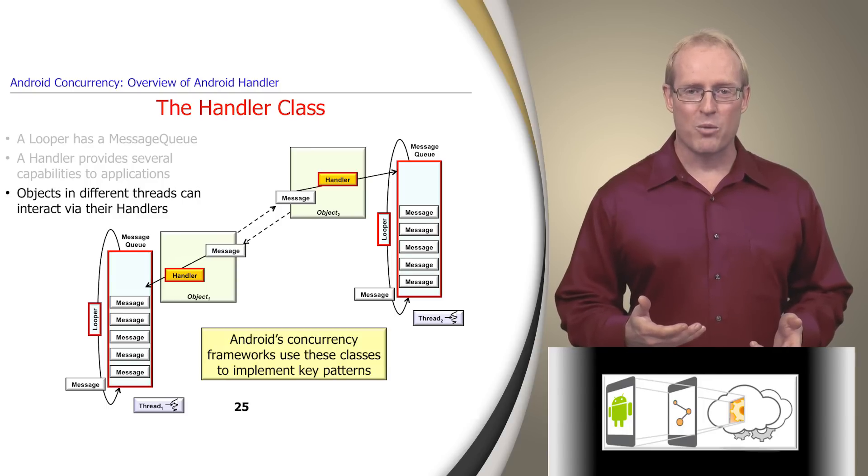Android concurrency frameworks use the handler, message queue, and looper classes to implement key concurrency patterns, such as active object, command processor, and the half-sync, half-async, as discussed later in this module.